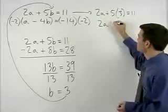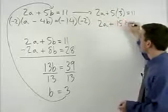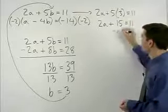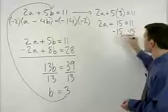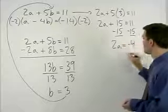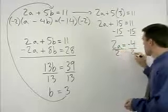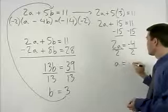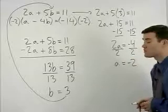That simplifies to 2a plus 15 equals 11. Subtracting 15 from both sides gives us 2a equals negative 4. Dividing both sides by 2, we have a equals negative 2.